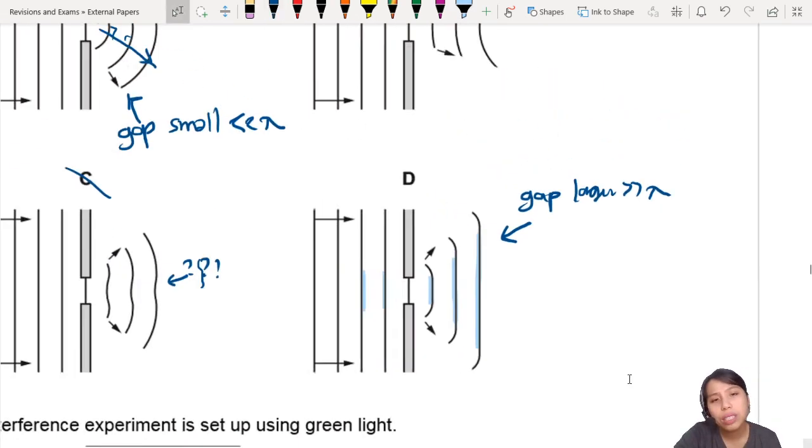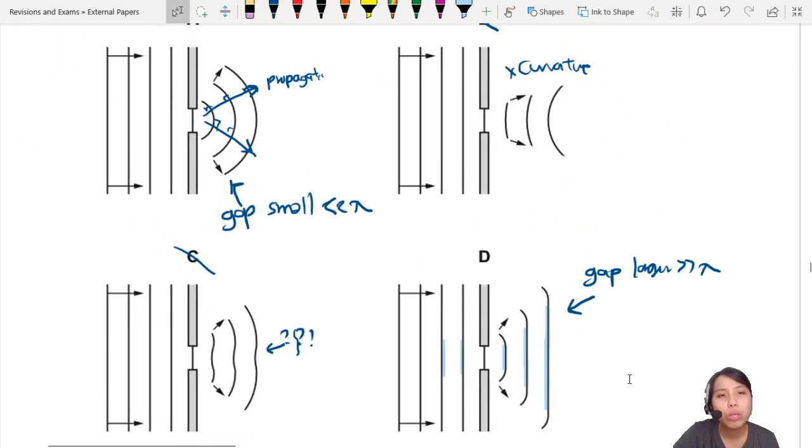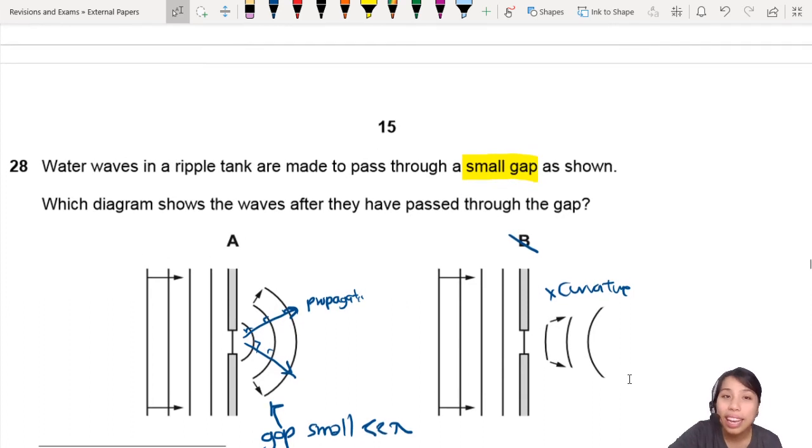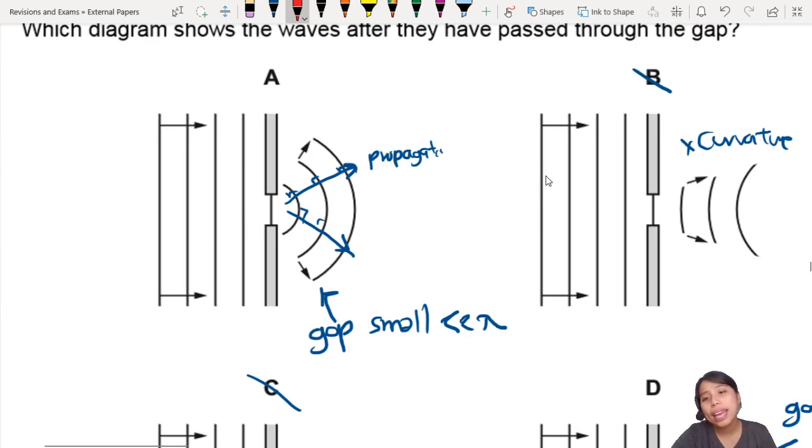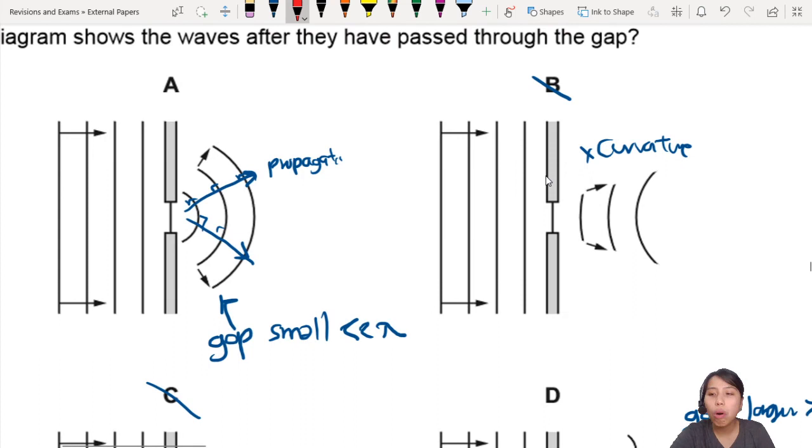But when I look at the picture, the gap looks the same. How do you know which one is bigger, which one is smaller? I underlined this for a reason, and it is an important clue. They said a small gap. So although A and D is possible, A is more likely because for a small gap, you will have that curving spread out of the geometric shadow of this diffraction pattern. So A is the best choice.